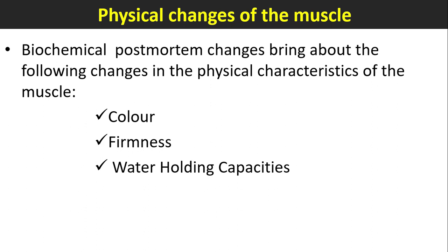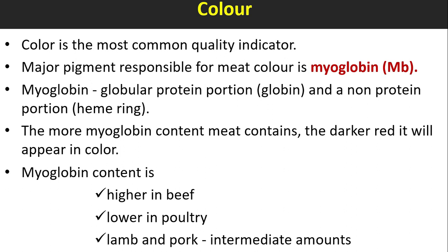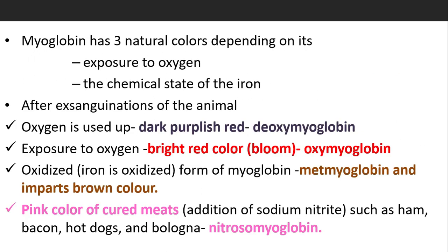Physical changes of the muscle: Biochemical post-mortem changes bring about the following physical changes — color, firmness, and water-holding capacity. Color is the most common quality indicator. The major pigment responsible for meat color is myoglobin, which consists of a globular protein portion and a non-protein heme ring. The more myoglobin content meat contains, the darker red it appears. Myoglobin content is higher in beef, lower in poultry, and intermediate in lamb and pork.